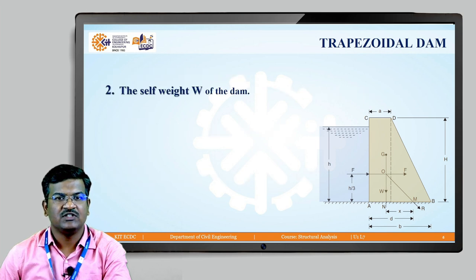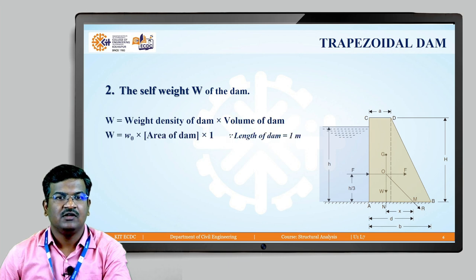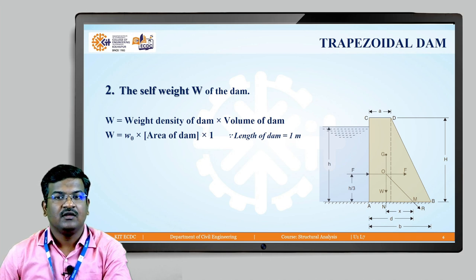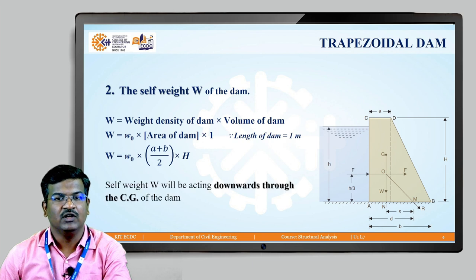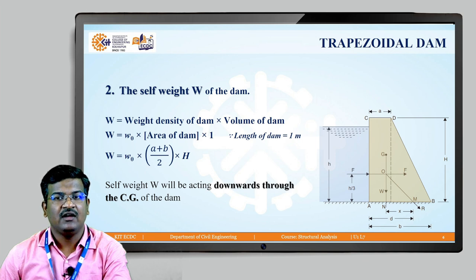The second force is the self-weight of the dam: weight density multiplied by volume. The only difference from the rectangular dam is that the area changes. For a trapezoidal dam, the area is (a + b)/2 × H. So the self-weight W = W₀ × (a + b)/2 × H × 1, acting downward at the centroid (CG) of the trapezoidal shape.